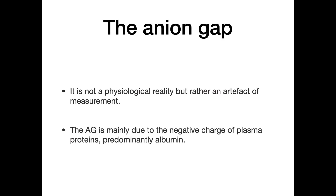Next, the concept of anion gap was considered. It is not a physiological reality but an artifact of measurement — it does not actually exist in the body because we cannot have a difference in charge inside the body. The anion gap arises because certain anions are not being measured, especially albumin and other substances which produce a gap in the measurement.